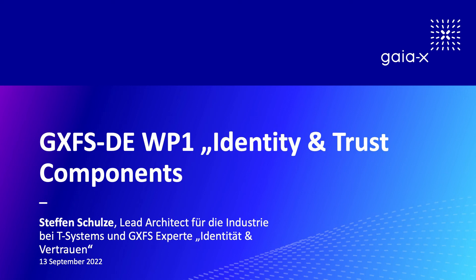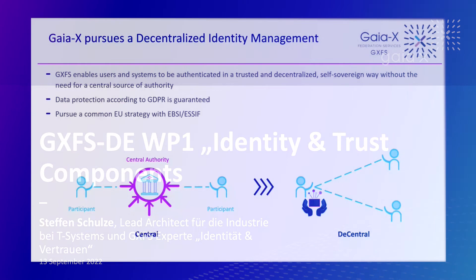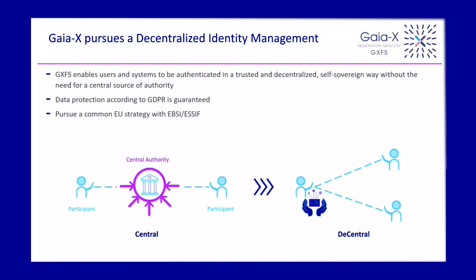I want to give you a quick overview about the work package Identity and Trust, and what it is designed for. The main purpose of the entire work package was to solve the problem between different federations within GTIX. The main goal was to find a solution to make authorization and authentication between federations possible without GDPR rule violation.